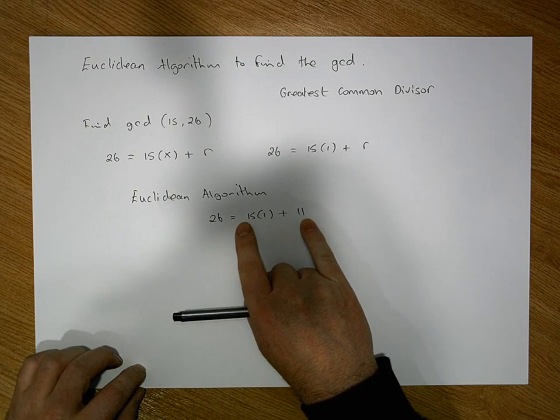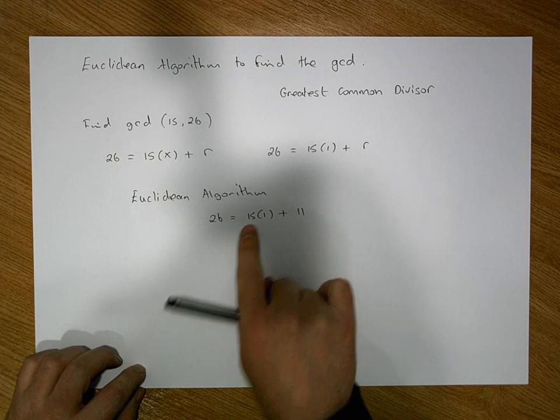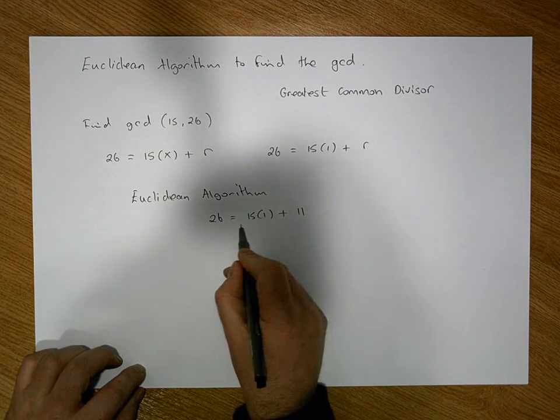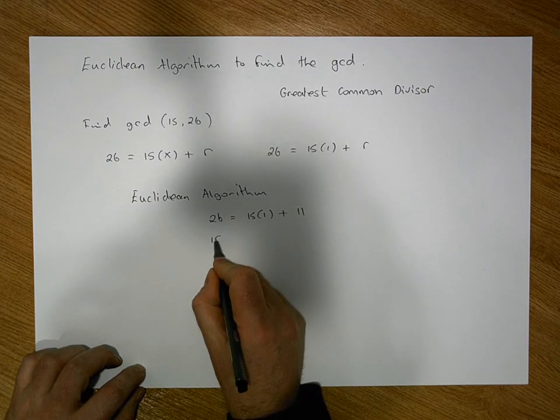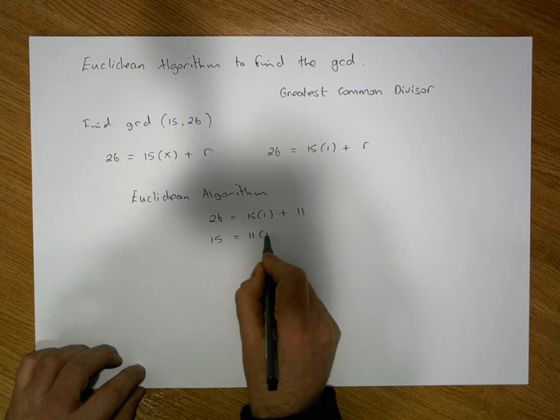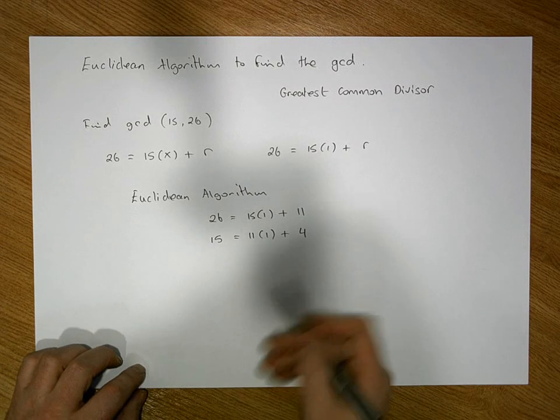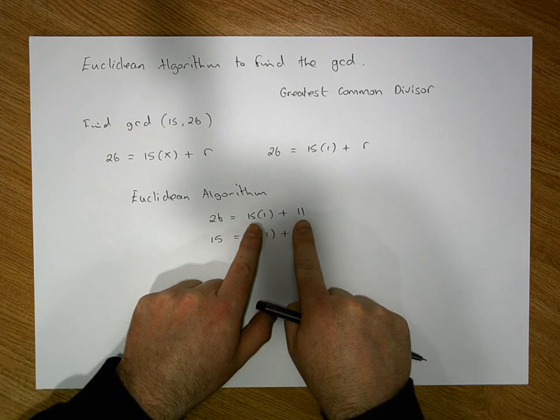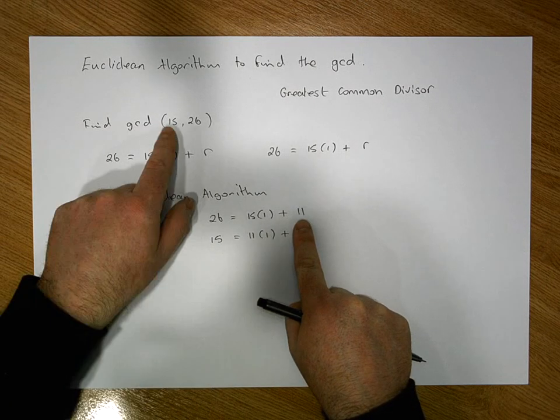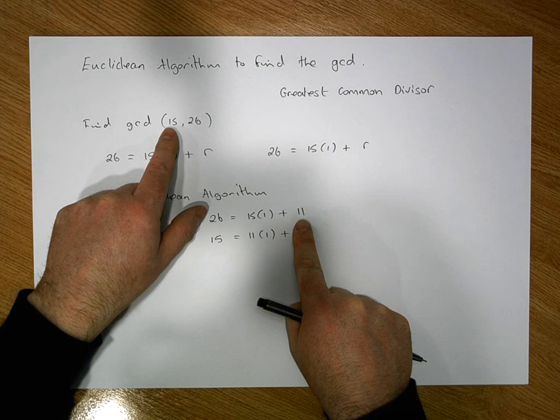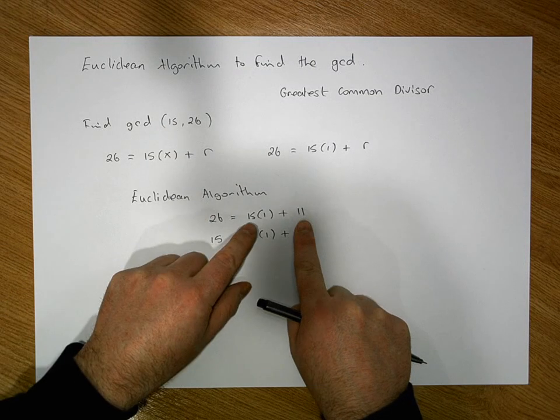How many times does 11 go into 15? What we have here is 15 is equal to 11 times 1 plus a remainder of 4. So we've applied the division algorithm to these two numbers, our original number that was in our GCD and also the remainder.